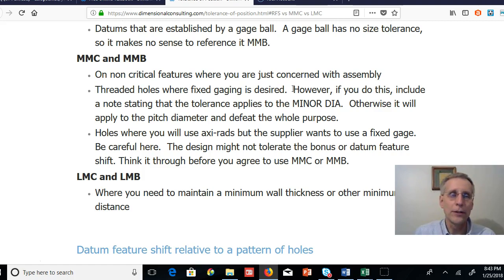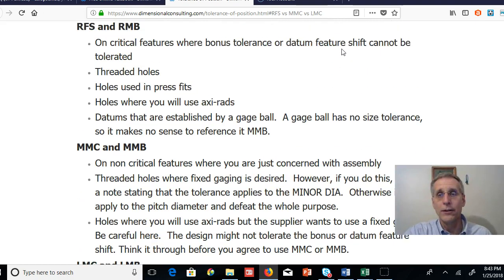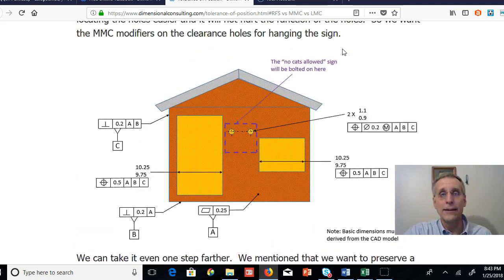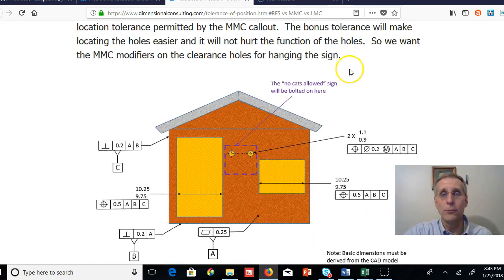And LMC and LMB, you do that where you want to maintain a minimum wall thickness or some other minimum distance. So I hope that helps. I hope I will see fewer drawings out there where there are either no M's or M's everywhere. We need to put our M's where they do some good and not put the M's where they're going to do some harm.